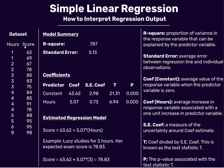In this case, the response variable is score and the predictor variable is hours. The output shows that 78.7% of the variance in score can be explained by the number of hours a student studied. The higher the R-squared value, the stronger the relationship between the predictor variable and the response variable. R-squared always ranges from 0 to 1 — the closer it is to 1, the stronger the relationship.